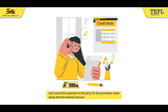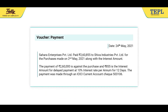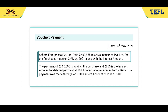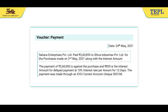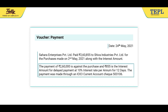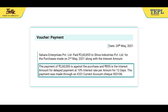Let's learn to do this by referring to an illustration. As on 24th May 2021, Sahara Enterprises Private Limited paid Rs. 2,60,855 to Shiva Industries Private Limited for purchases made on 2nd May 2021 along with the interest amount. The payment of Rs. 2,60,000 is against the purchase and Rs. 855 is the interest amount for delayed payment at 10% interest rate per annum for 12 days. The payment was made through an ICICI current account check.